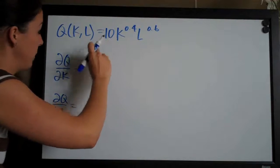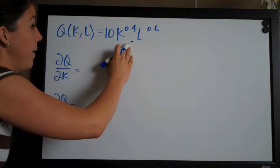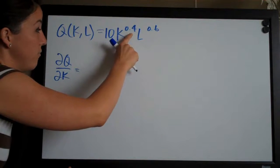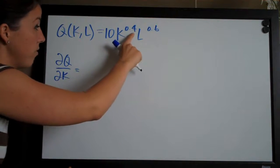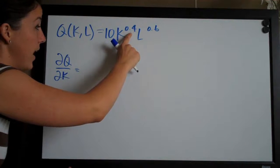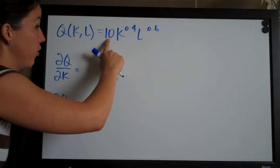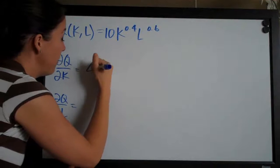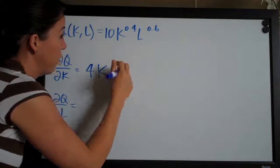will just get absorbed into the coefficient. So the derivative here, we will first multiply the exponent on k by the coefficient here. 10 times 0.4 is simply 4 and then we subtract 1 from the exponent.